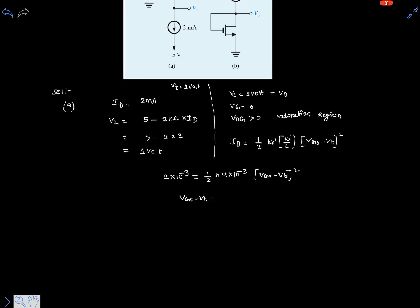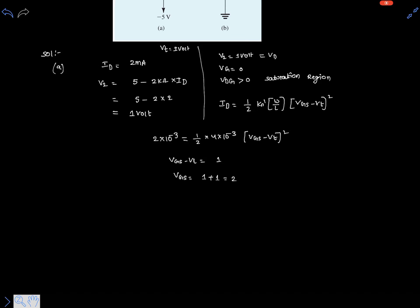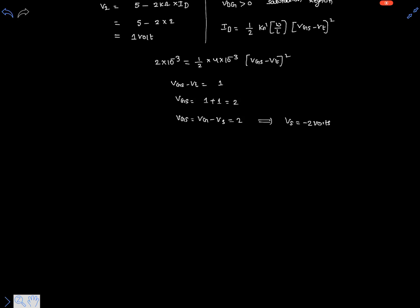So vgs is clearly 1 plus vt, which is 1 volt, equals 2 volts. But vgs is vg minus vs equals 2 volts. But vg is already 0 because the gate is grounded, so vs is minus 2 volts.